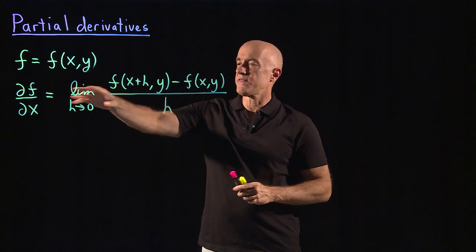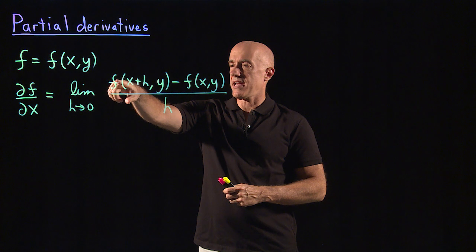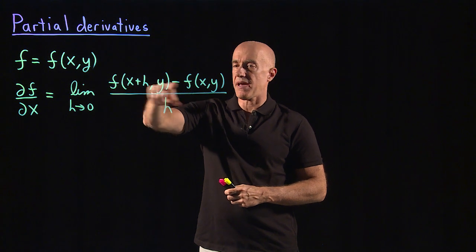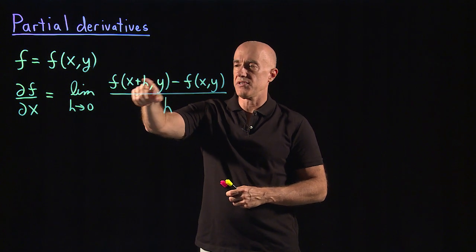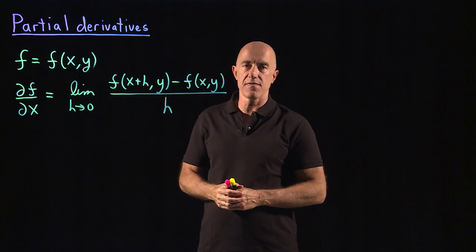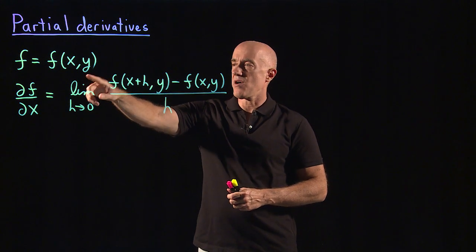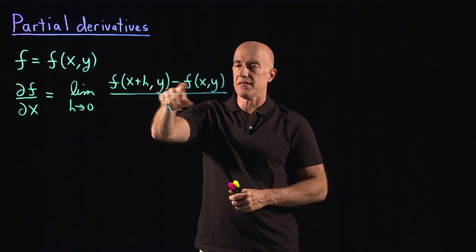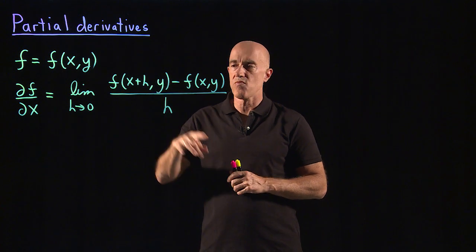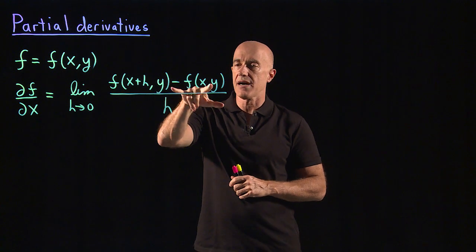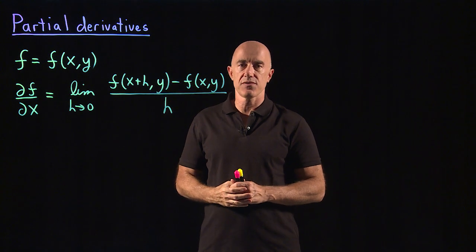The takeaway from this formula is that you're differentiating f with respect to x — that's the usual definition of a derivative of a function of one variable. But here, y is held constant. So you don't do anything with y; you treat y like a constant and differentiate with respect to x.